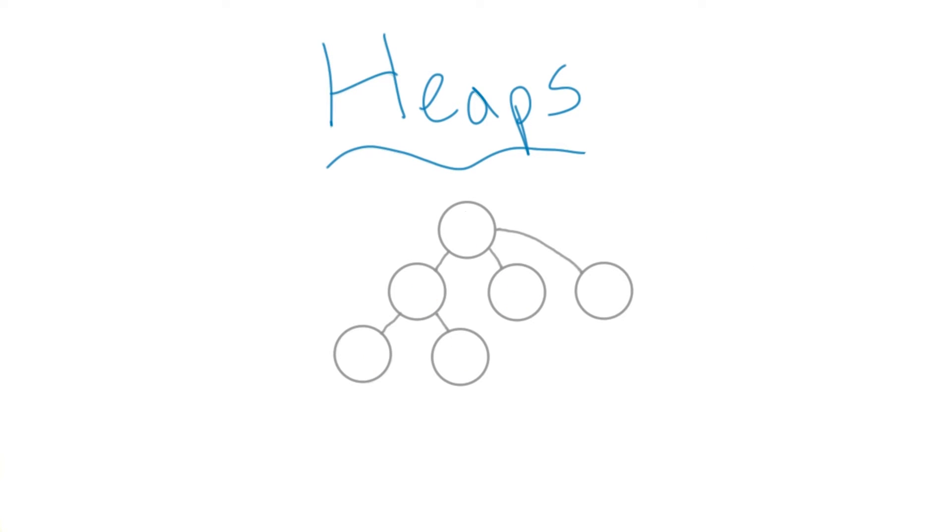Heaps don't need to be binary trees, so parents can have any number of children. Operations like search, insert, and delete can vary a lot based on the type of heap we're discussing.